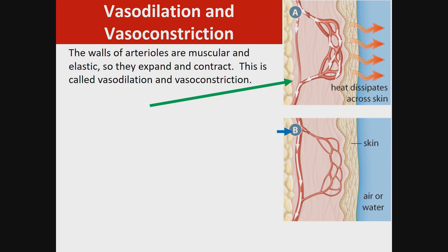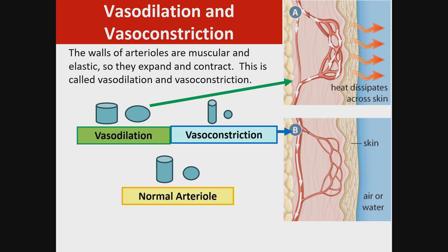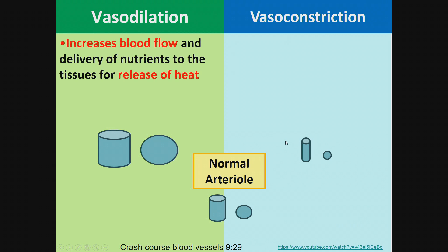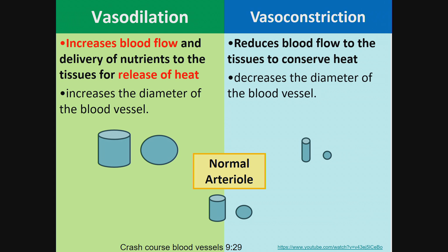The walls of arterioles are muscular and elastic, so they expand and contract. This is called vasodilation and vasoconstriction. Vasodilation allows heat to dissipate across the skin, while vasoconstriction keeps in heat and provides less circulation to that area. Vasodilation increases blood flow and delivery of nutrients to the tissue for release of heat by increasing the diameter of the blood vessel. Vasoconstriction reduces blood flow to the tissues to conserve heat and reduces the diameter of the blood vessel.